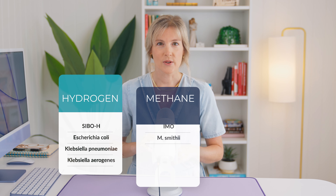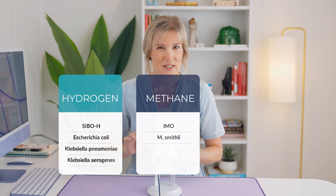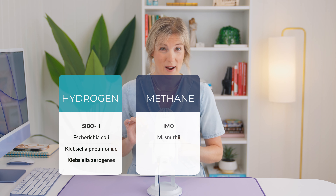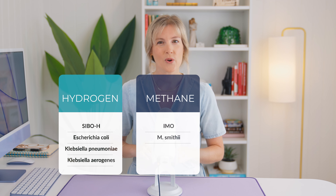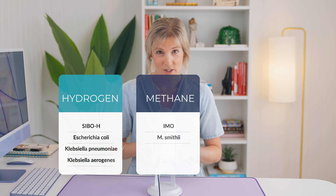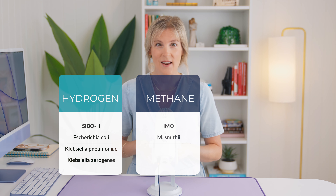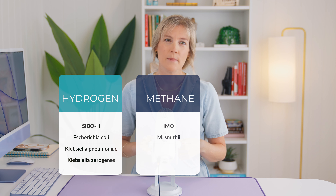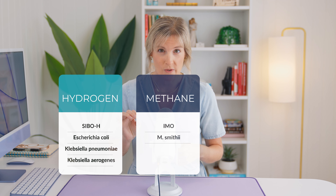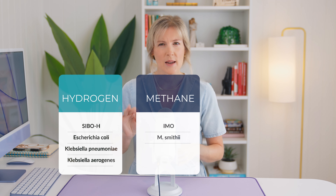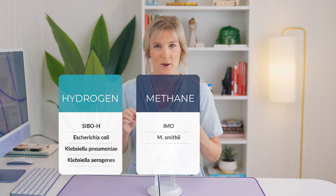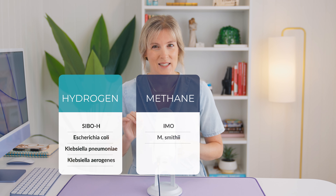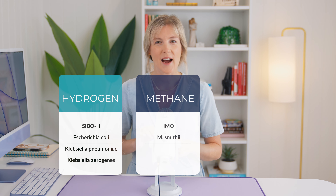The second type used to be called methane dominant SIBO, but it turns out the overgrown microbes aren't actually bacteria at all — they're a single-celled organism known as archaea. The main archaea species responsible for excessive methane gas production in the small intestine is Methanobrevibacter smithii. Because these aren't bacteria, and because we're learning that these methanogens can also overgrow in the large intestine, it doesn't make sense to keep calling it methane dominant SIBO. It's now known as intestinal methanogen overgrowth, or IMO for short.